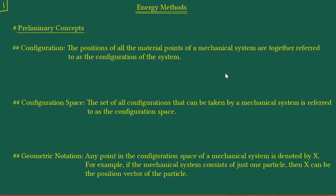Continuing, next we have configuration space. Just as one particular mechanical system can have very many different configurations, the configuration space is basically the set of all the very many different configurations that can be taken by the mechanical system.